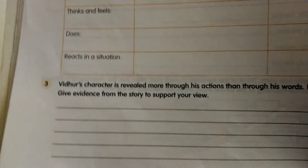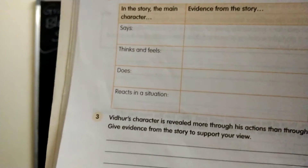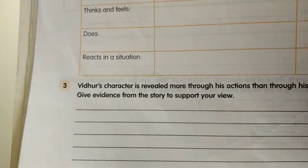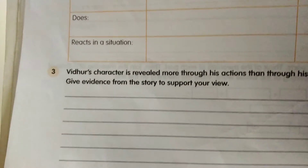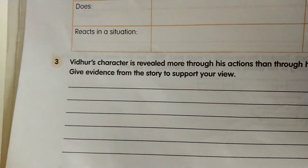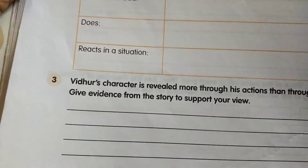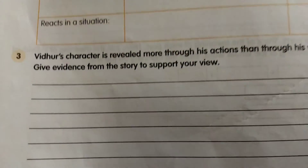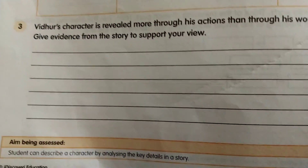Now coming to the third question: 'Vidur's character is revealed more through his actions than through his words — do you agree?' Based on the actions he did and the sentences he spoke, give evidences from the story to support your view. Try to take sentences from the textbook so that you can guess his character. They are asking you to write evidences — the actions he did — from the story. Complete the third question, and based on this context, try to guess others around you to know the good and bad in society. Children, thank you. Complete your volume page number 28 and send it to WhatsApp.